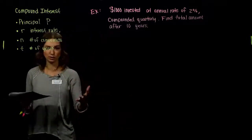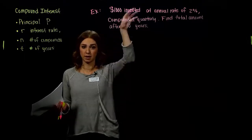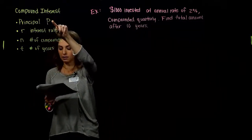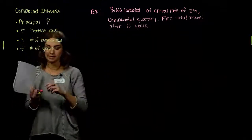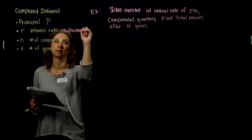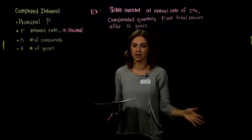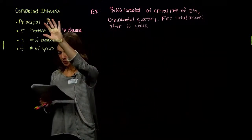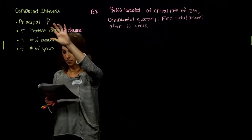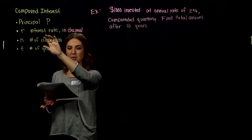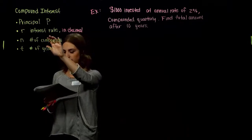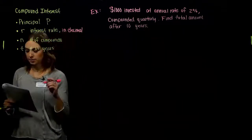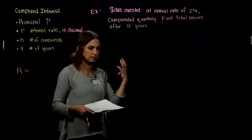The compound interest formula is exponential, with our variable up in the exponent position. A principal P dollars is invested at an annual interest rate R (in decimal form), compounded N times per year. The accumulated amount A after T years is given by: A = P(1 + R/N)^(NT). P, R, and N are constants given to us; T is our variable — the time in years.